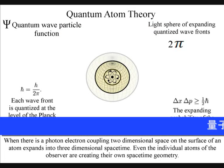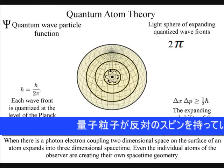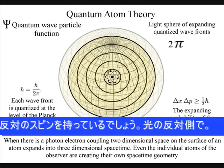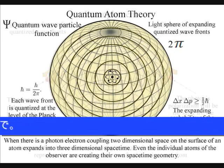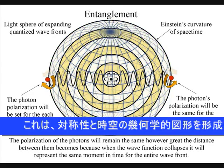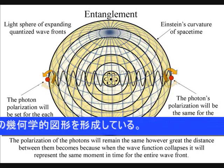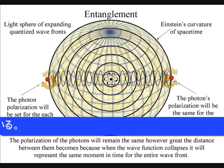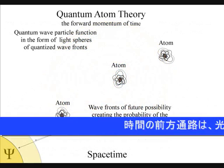Light will always take the simplest and most efficient path, expanding out in all directions, forming light spheres of electromagnetic radiation. The polarization of the light will be the same for the entire surface of the light sphere, creating quantum entanglement and the symmetry and geometry of space-time.